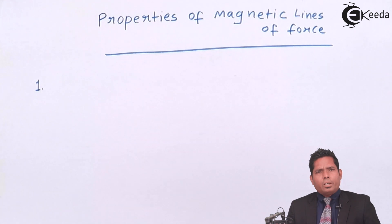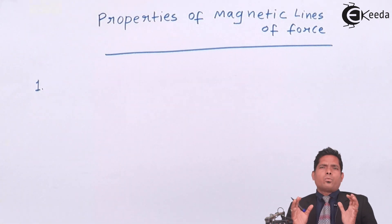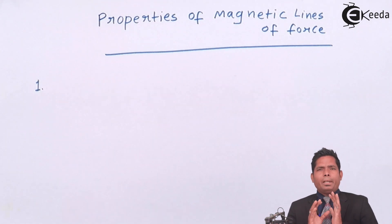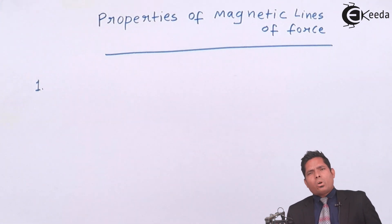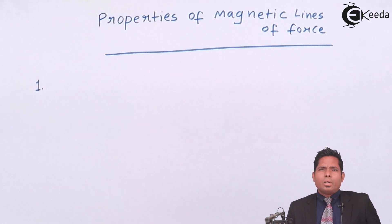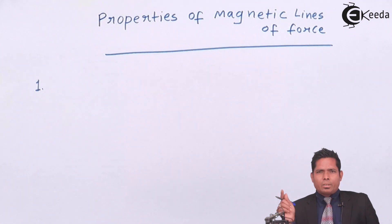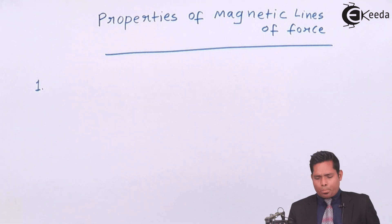First of all, magnetic lines of force form complete loops, unlike electric lines of force which are incomplete. So here it is a complete loop.